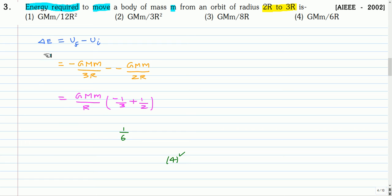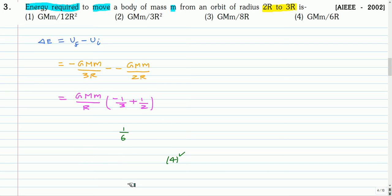The energy required is the increase in gravitational potential energy. The final gravitational potential energy is −GM/3r and the initial is −GM/2r. From this we get the energy required as (1/6)GM/r. The correct option is option four.